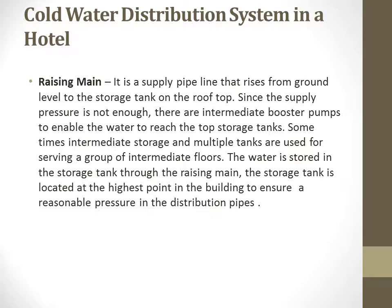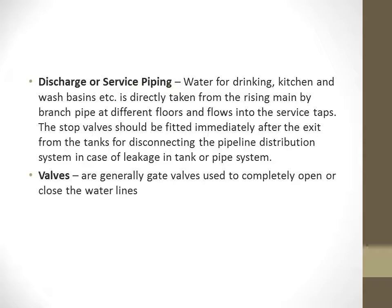Next is the discharge or servicing pipe. Water for drinking, kitchen, and wash basins is directly taken from the rising main storage tank. From the storage tank, water reaches the kitchen, for drinking, wash basins, and sinks. To ensure proper flow during maintenance or in case of leakage, we use valves to completely open or completely close the water lines.